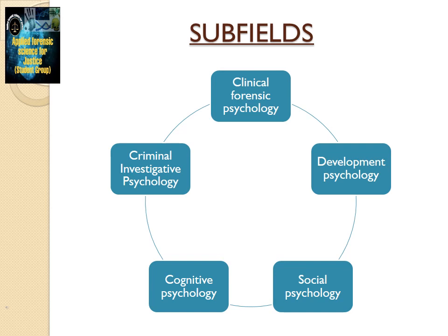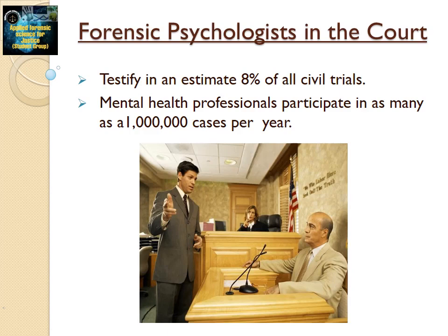Third, social psychology, which is concerned with how jurors interact and arrive at a group decision. Fourth, cognitive psychology, which is closely associated with the social psychology subfield but looks more into how people make decisions in legal cases. Fifth, criminal investigative psychology, which includes police psychology, criminal profiling, and psychological autopsies. Experts may choose to conduct research or work closely in analyzing the mind of criminal suspects.